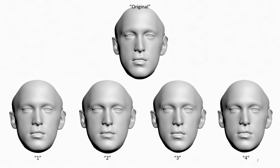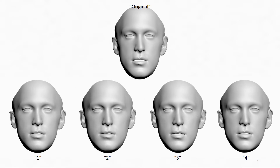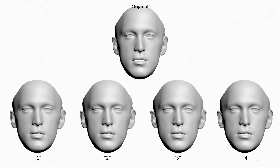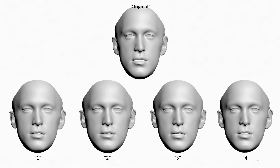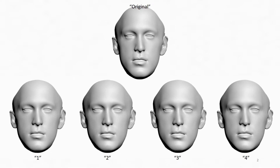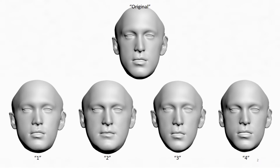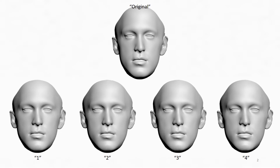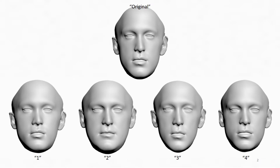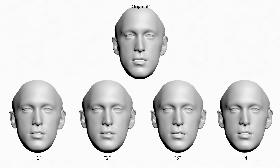PCA eigenvectors characterize the data variation space but don't provide a clear intuitive interpretation. Here we show the result of editing with the first four eigenvectors. As can be seen, the global eigenvectors make changes all over the face and the changes don't have a meaningful interpretation.